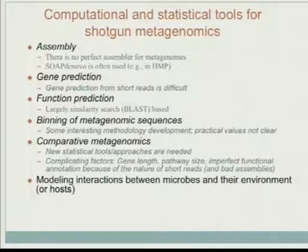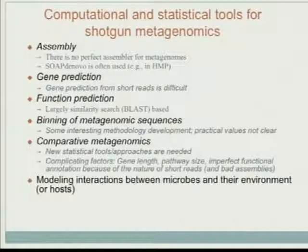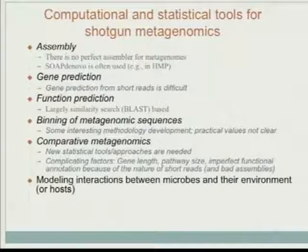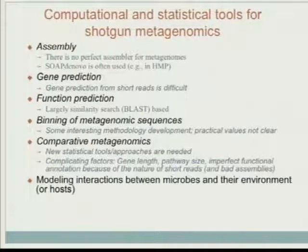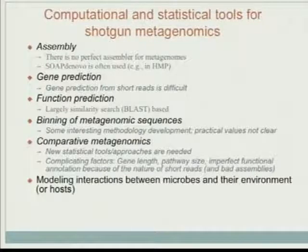So you still have a lot of those short reads. But many groups, they just try to predict the functions just using the short reads - they don't even bother to do assembly. If you read papers, there are quite some papers just based on annotation using short reads - no contigs, no assembly. That's one of the problems.